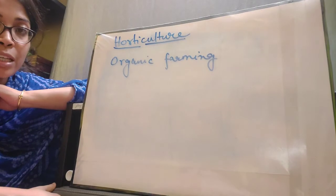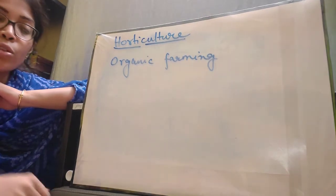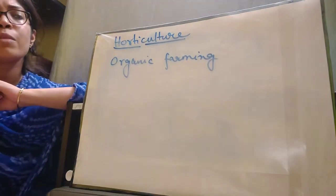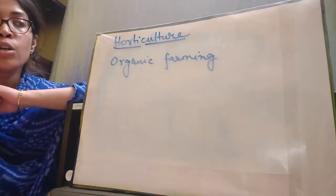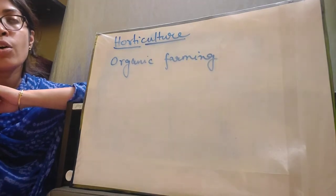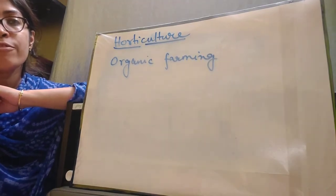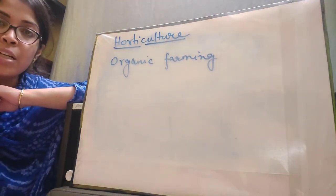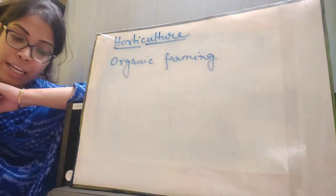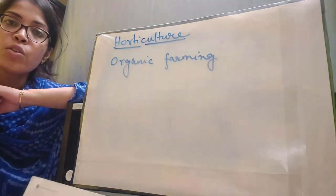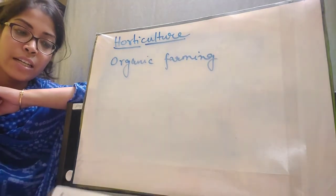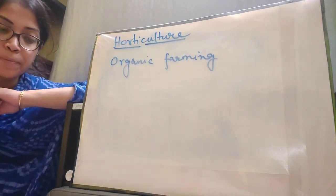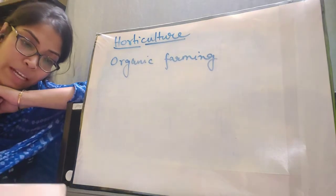The third point is that organic produce cannot be stored for a long time. Organic produce is not produced with chemicals, and although chemicals do some harm to the crops, they also keep the harvest good for a long time. Since organic products do not have those fertilizers and pesticides in them, they are prone to spoil very easily and thus cannot be stored for a long time. So here we are done with the topic of organic farming, which is very important in this chapter.